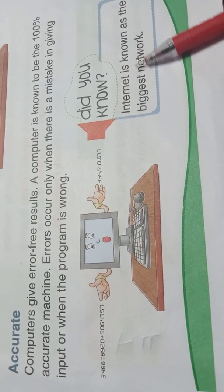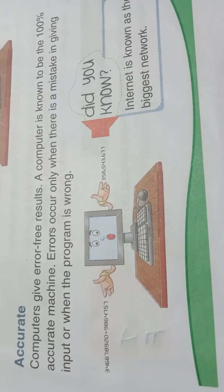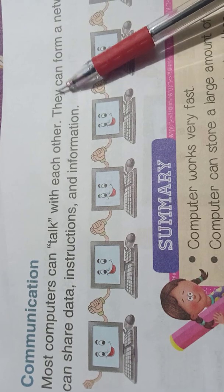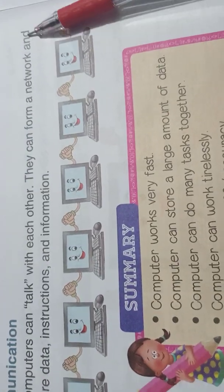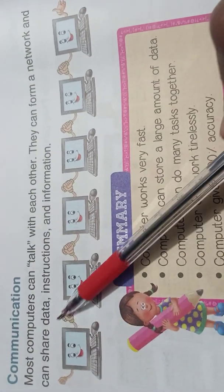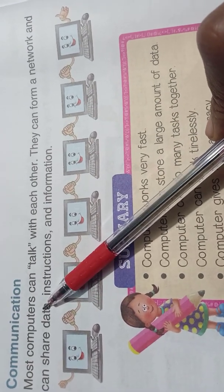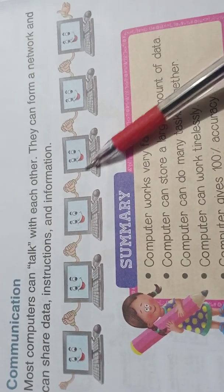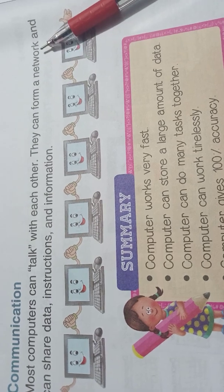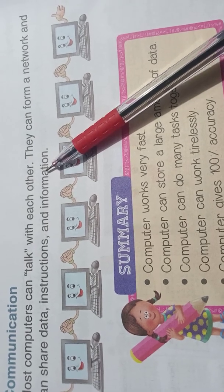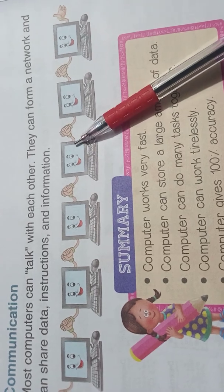The internet is known as the biggest network. The last feature is communication. Most computers can talk with each other. They can form a network and share data, instructions, and information. One computer connected to another computer forms a network.